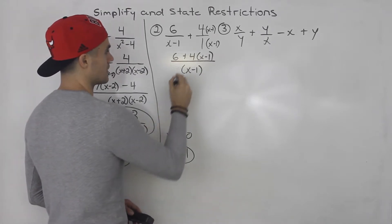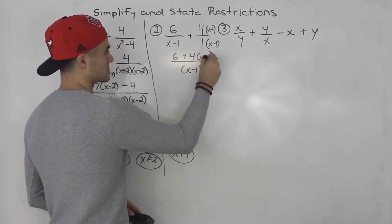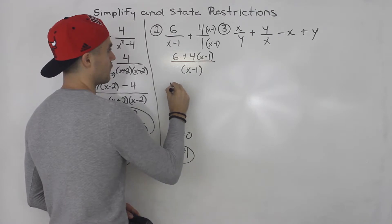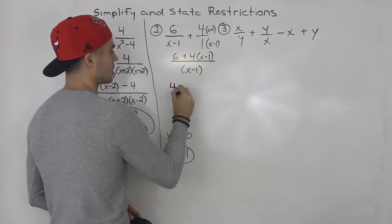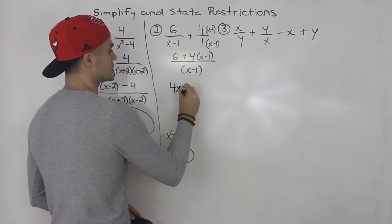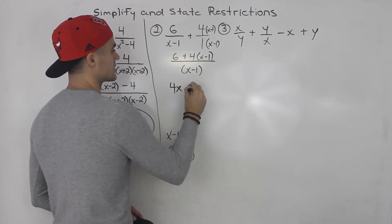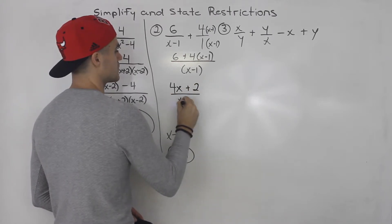So then we expand this. This would be 4x minus 4. So we would have 4x, and then 6 minus 4 is 2, 2 over x minus 1.